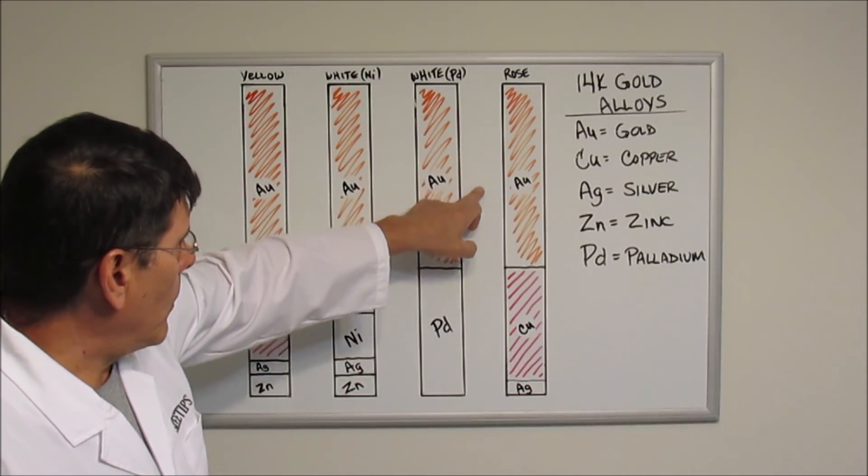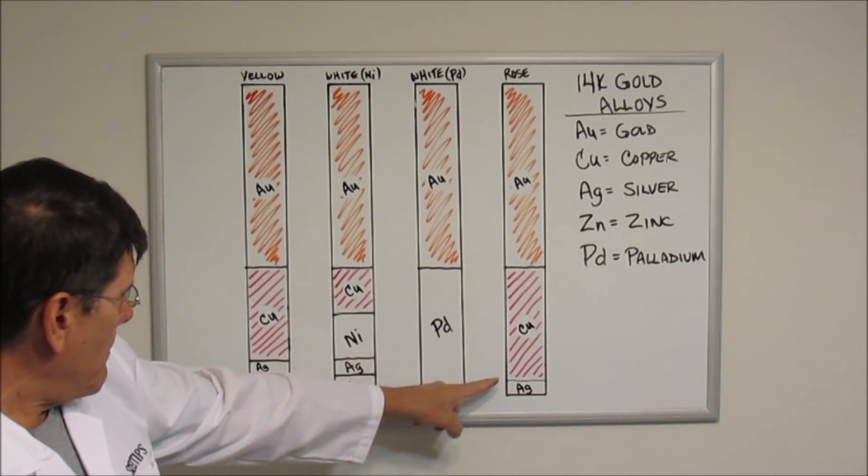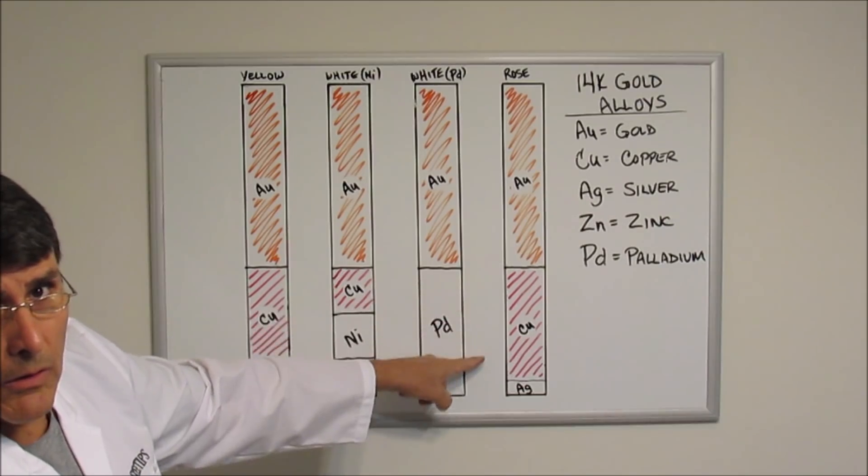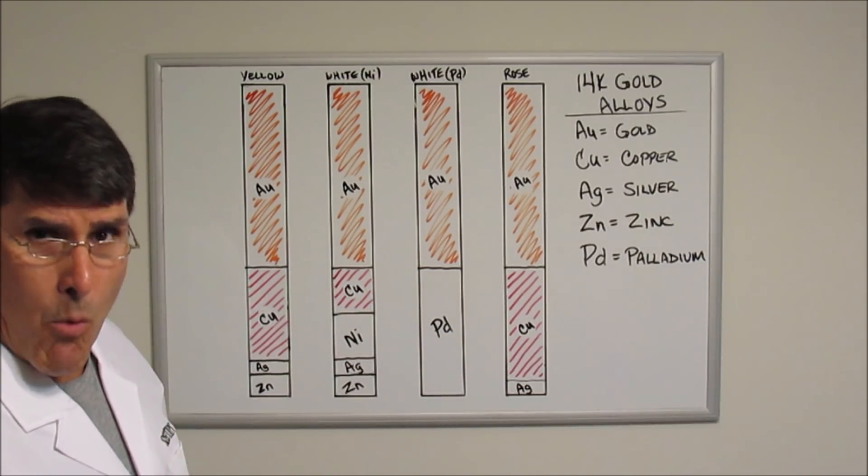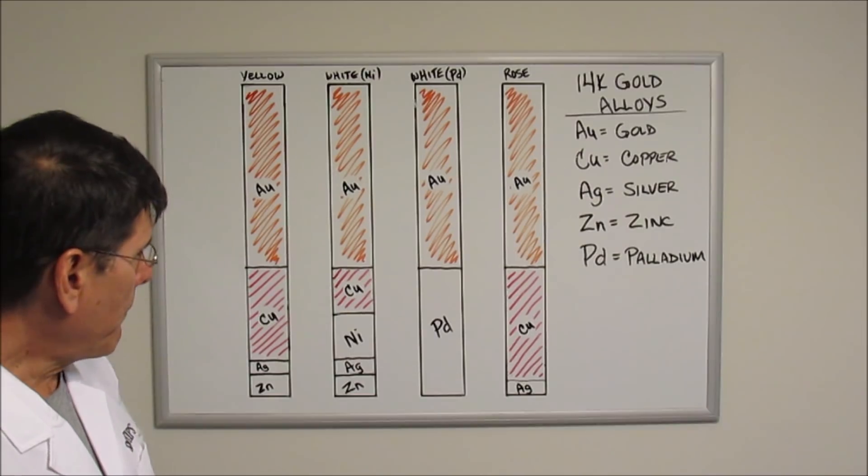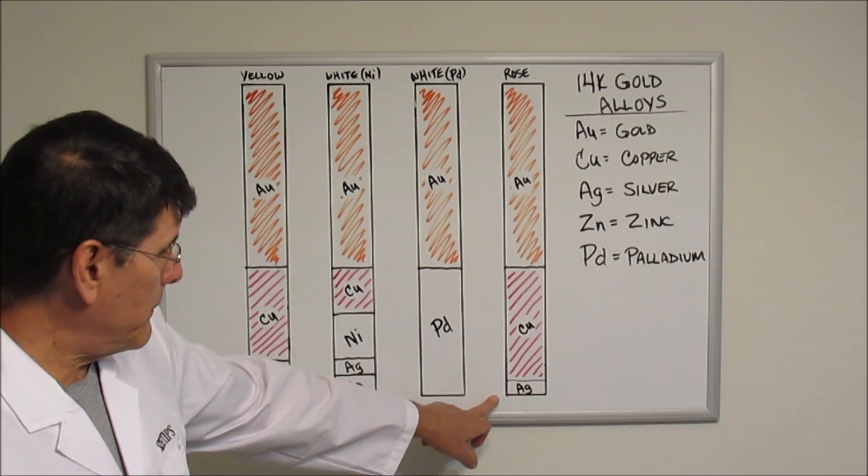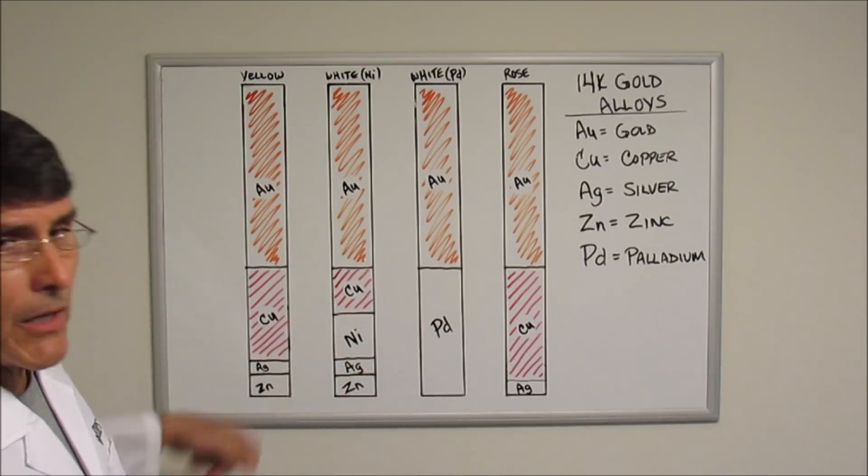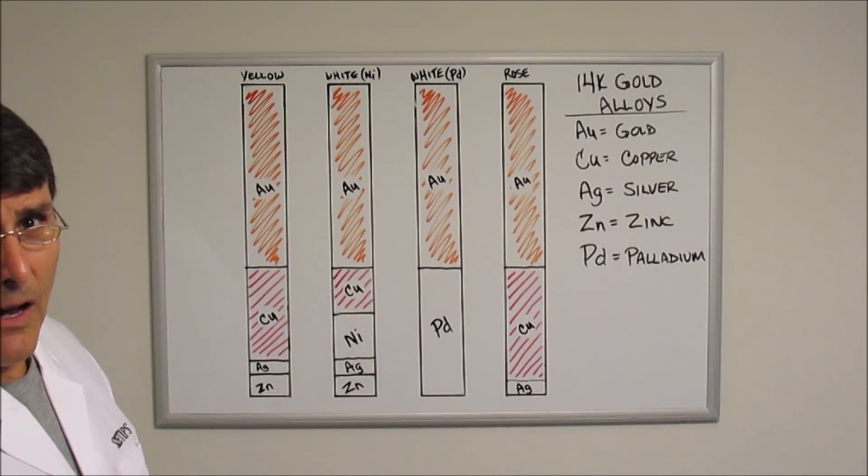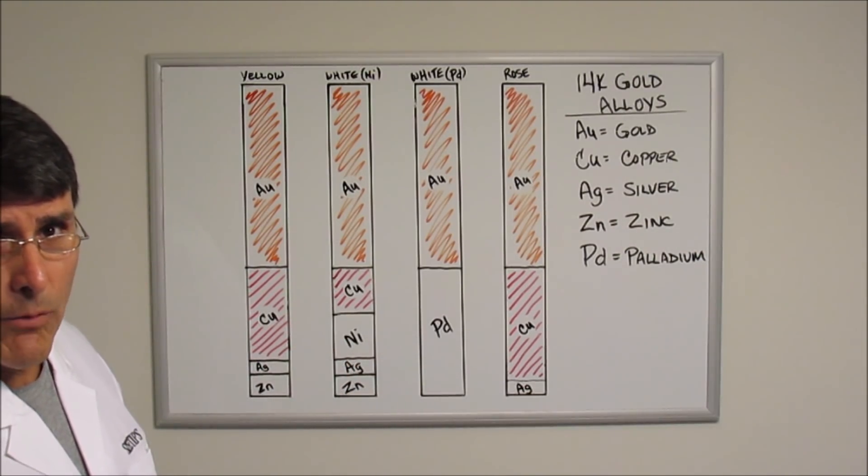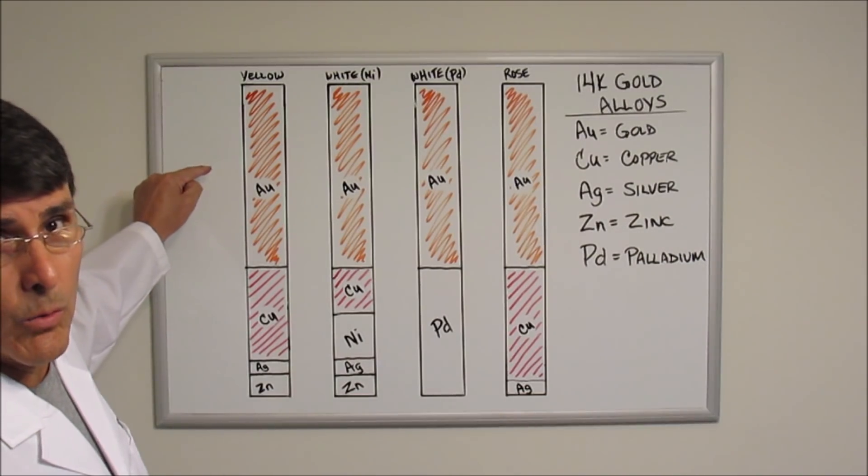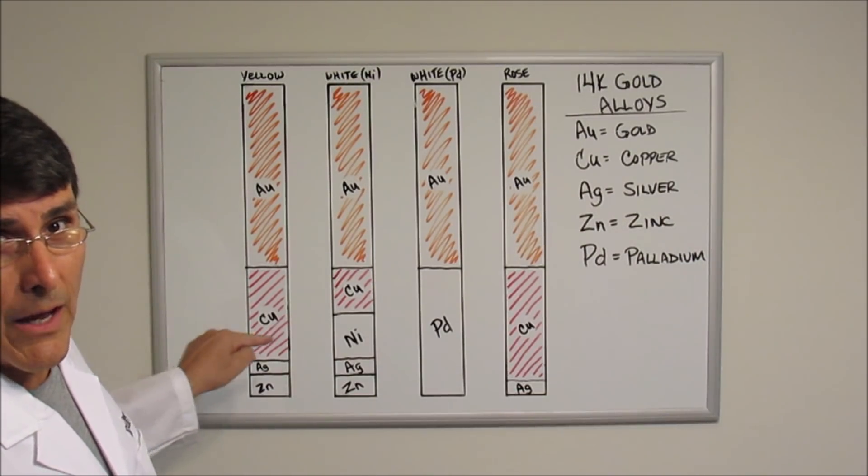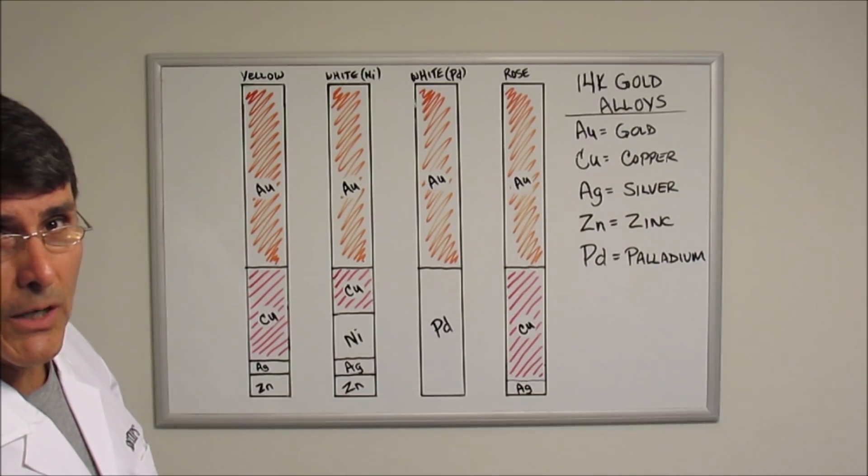Here we have rose gold. What they've done is they've increased the amount of copper in the rose gold, which tends to give a more reddish appearance. There's just a little bit of silver, about 5 percent silver. So that's how they achieve the different colors of the different alloys of 14k gold. They all have the same amount of gold in the alloy, but they alloy other metals to achieve those different colors.